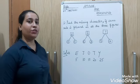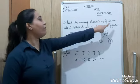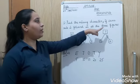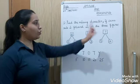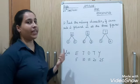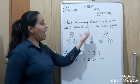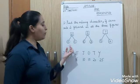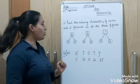Now dear students see the question 2: find the missing character if same rule is followed in all the three figures. You have to find out the missing character. Now see here, D is given, I is given, and below D two numbers are 2, 2, below I is 6, 3, and then here 9, 12.